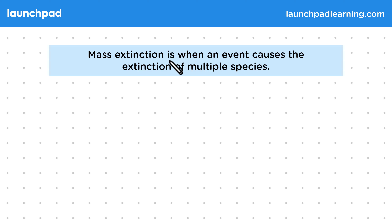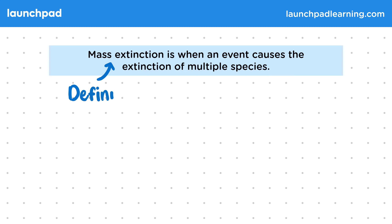Mass extinction is when an event causes the extinction of multiple species. Having knowledge of a specific event is not needed for the exam, but you should be familiar with the definition of mass extinction.